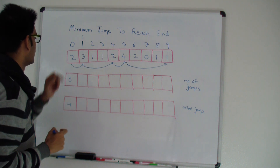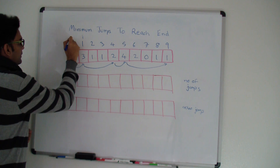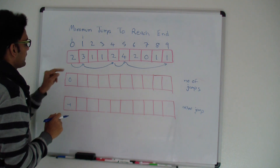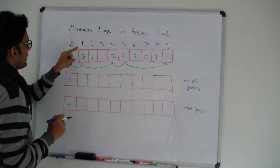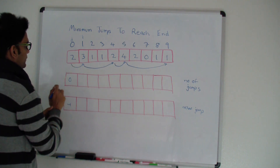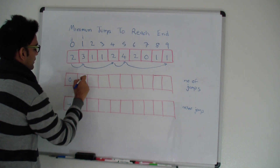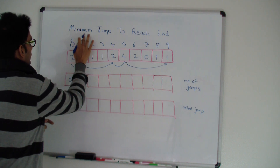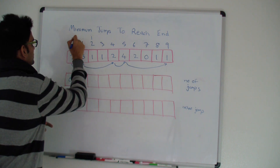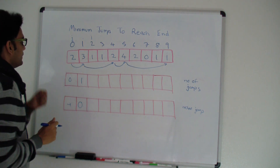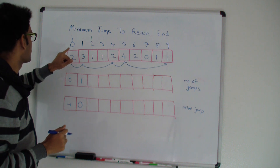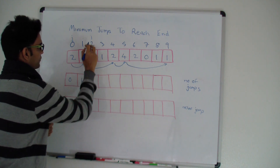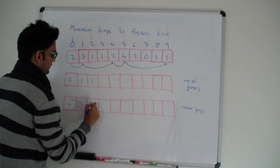Let's start with i=1. When i is one and j is zero, I check: can I reach from j to i? Yes, because from j I can jump two steps and i falls in that range. So the minimum number of jumps to reach i is one, and the way we reach it is from position zero. Now when i is two and j is zero, can I reach i from j? Yes, because zero plus two is two, so the minimum number of jumps to reach index two is also one, reached from zero.